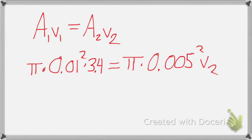Since the cross-sectional area of a cylinder is a circle, the area is π r squared. Notice that I changed my radii to meters away from centimeters. So it's π × 0.01² × 3.4 meters per second equals π × 0.005² × V₂.